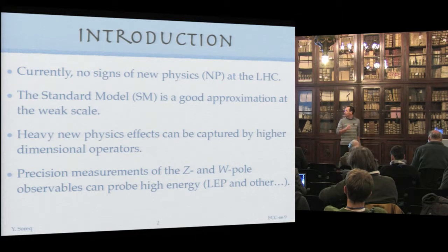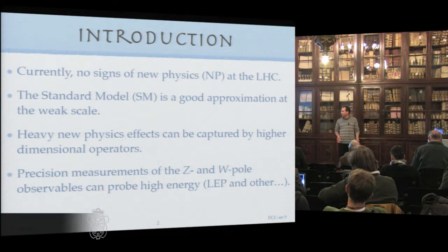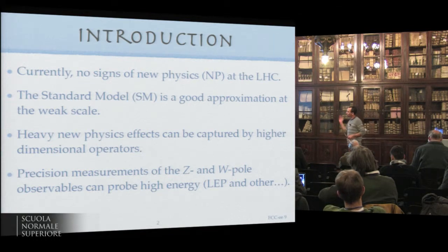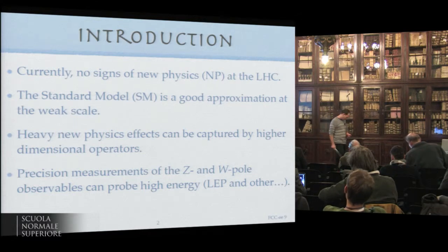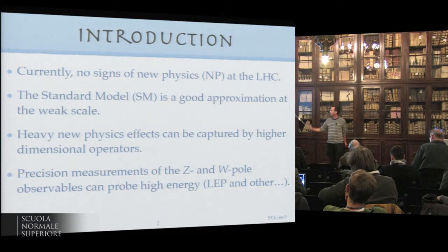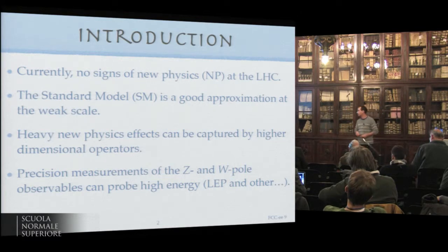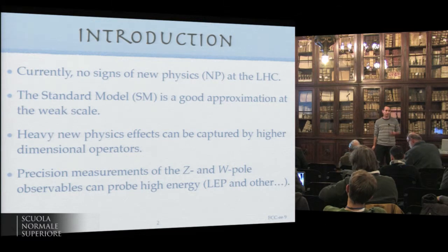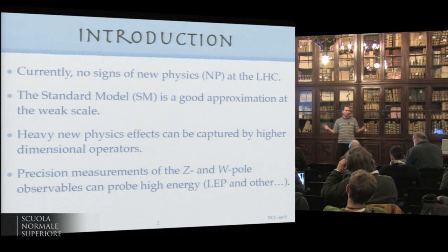This is the flavorful electroweak precision constraint on the dimension six operators. It's work in progress with a letter from Weizmann and Adam Falkowski. Currently we don't see signs of new physics at the LHC. The standard model gives a good approximation at the weak scale. We can capture heavy new physics effects by higher dimensional operators in a roughly model independent way. Precision measurements of the Z and W pole observables can probe higher energy scales.